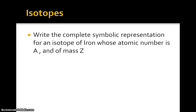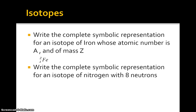We know where to put Z, but A should go below. Let's do this for a real element. Write the complete symbolic representation for an isotope of nitrogen with eight neutrons. You'd look up the atomic number of nitrogen, which is 7 since it comes after carbon. Atomic number 7 means seven protons. Seven protons plus eight neutrons gives a mass number of 15, and the atomic number is 7.